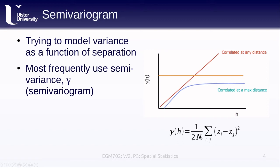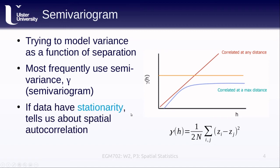We take 1 over 2 so that we're not double counting our z_i and z_j, since swapping them gives the same value. Now, if our data have stationarity, the semivariogram tells us something about spatial autocorrelation. The red line here represents data that have correlation at any distance, while the blue line shows the variance rising to a top value and then leveling off — indicating a distance beyond which spatial autocorrelation stops.